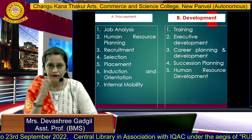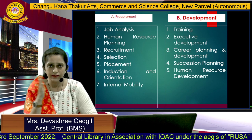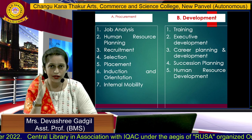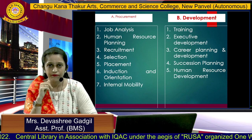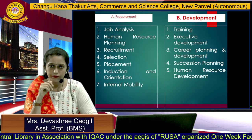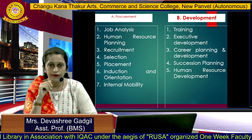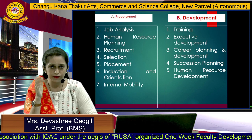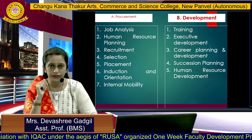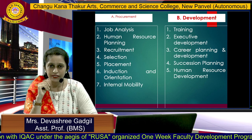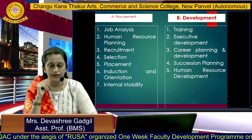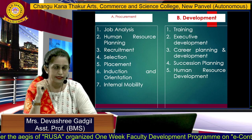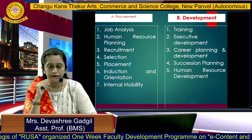Now let us understand the functions of HRM in detail. Number one is procurement. Under procurement: job analysis, human resource planning, recruitment, selection, placement, induction and orientation, and internal mobility. These are the basic functions of HRM under procurement.